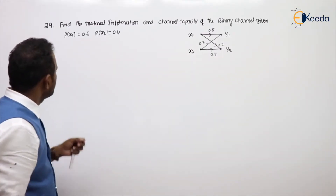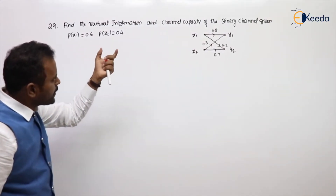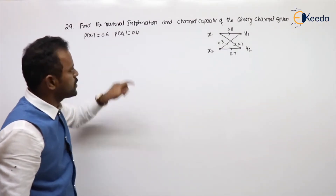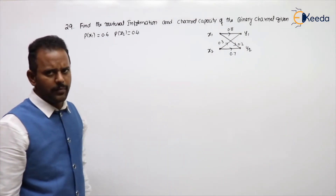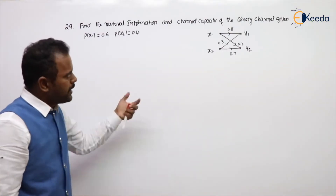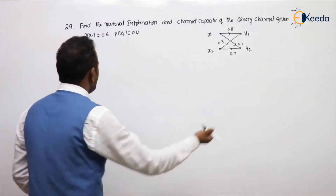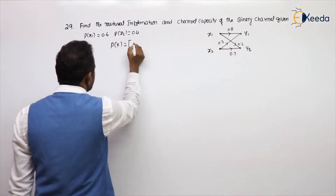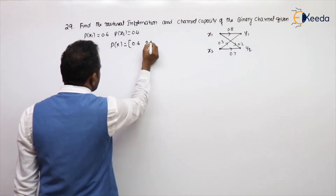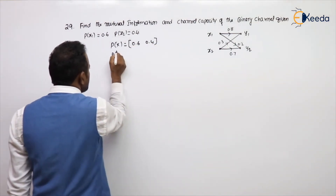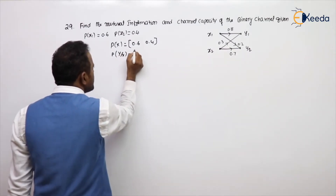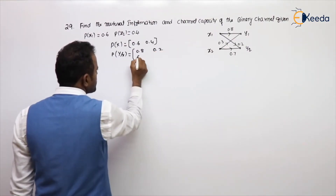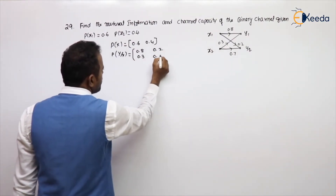See the next problem: find the mutual information and channel capacity of a binary channel where P(x1) = 0.6, P(x2) = 0.4, and the binary channel is given. The input matrix is [0.6, 0.4]. The channel matrix P(y|x) is [0.8, 0.2; 0.3, 0.7].